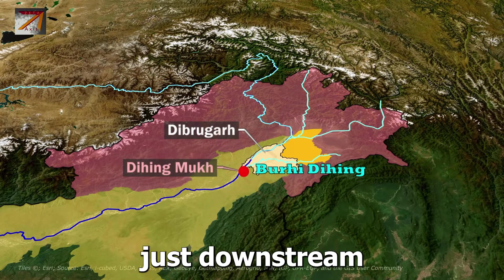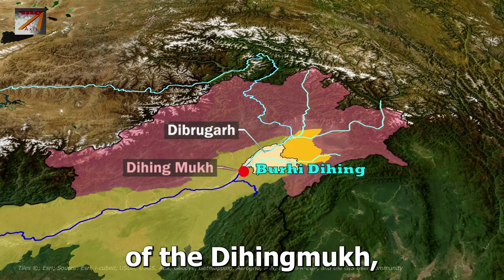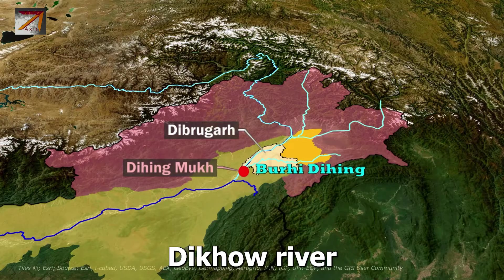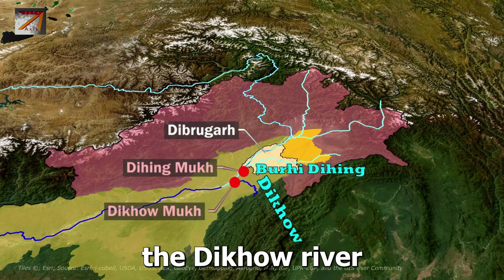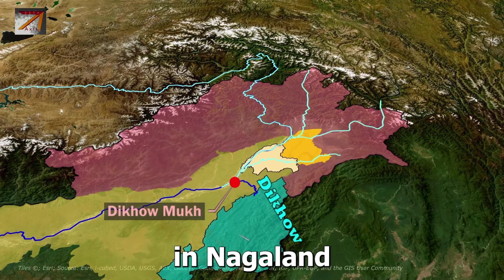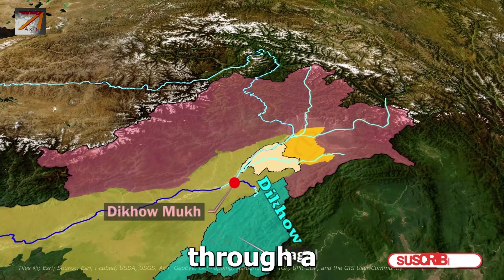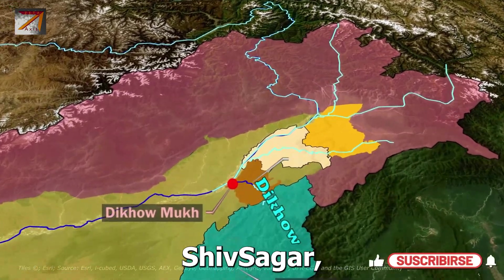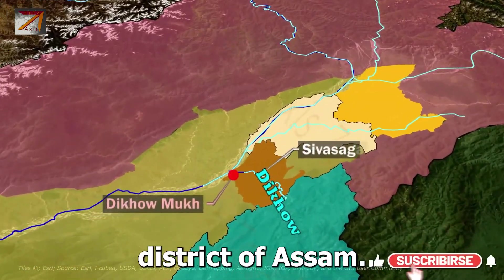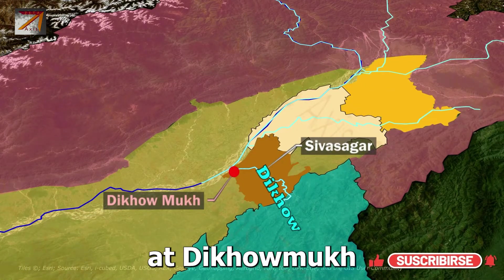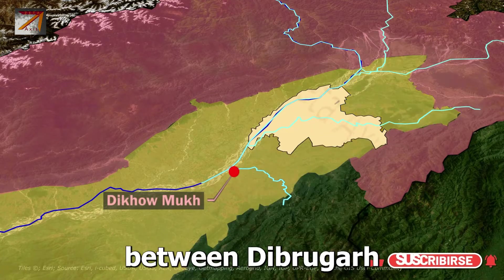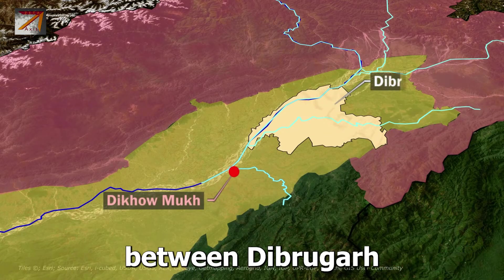Just downstream of Dihingmukh, the Dikhou River meets Brahmaputra at Dikhoumukh. The Dikhou River originates in Nagaland and flows through Sivasagar district of Assam before joining Brahmaputra at Dikhoumukh.